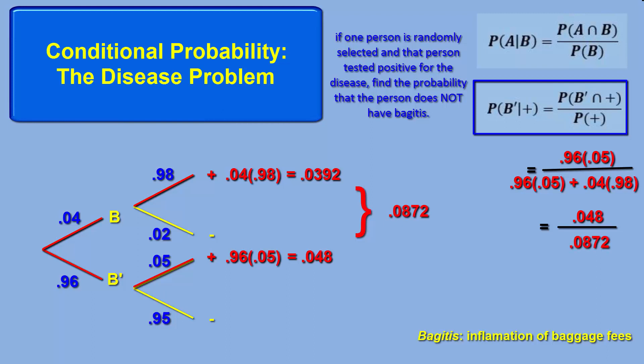Our conditional probability, then, of not having the disease despite testing positive is .550. By the way, we do not have to use the conditional probability formula to calculate this probability. We could shrink the sample space from 100% down to just the .0872 possibility of testing positive, and then divide the portion of that involving a person who does not have the disease, and we get the same answer.